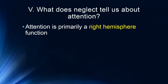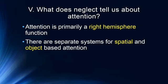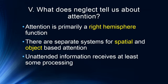So what does neglect tell us about attention? Attention is primarily a right hemisphere function. There are separate systems for spatial and object-based attention — no surprise there, as we know there is a what versus where pathway. We also know that unattended information receives at least some processing, and this is consistent with most of our models of attention.